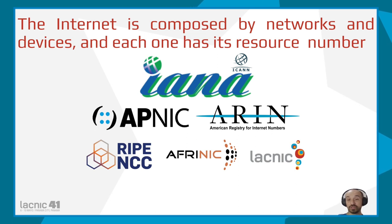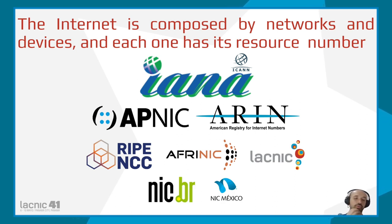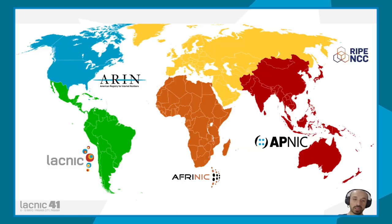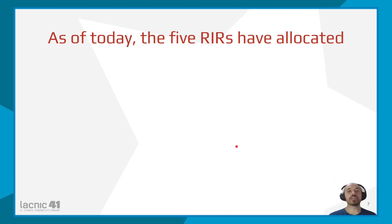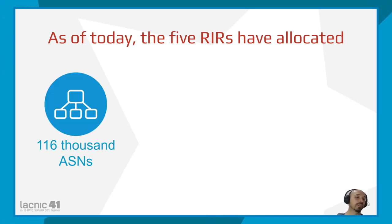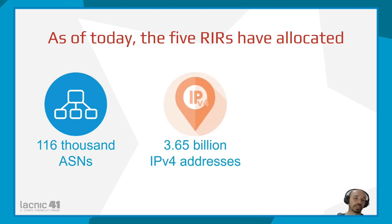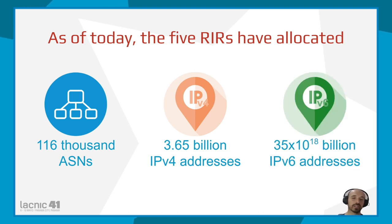Depending on the size of the country, there could be other registries like the Brazilian or Mexican one, responsible for managing resources in a given country. Here we have a map showing the coverage area of each RIR: ARIN in North America, LACNIC in Latin America, AFRINIC in Africa, RIPE NCC in the European part of Asia, and APNIC in the Asia-Pacific region. As of today, those RIRs have allocated 160,000 ASNs, 3.6 billion IPv4 addresses, and 35×10^18 IPv6 addresses.